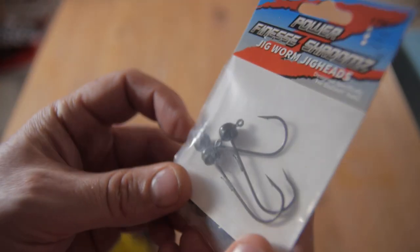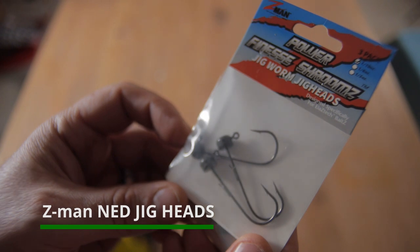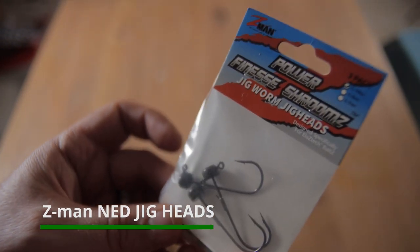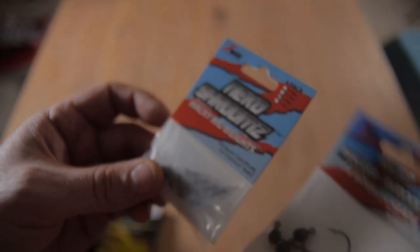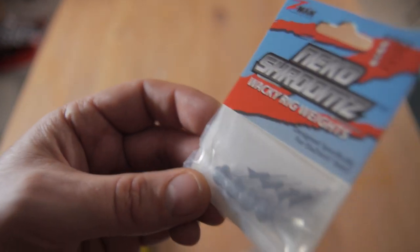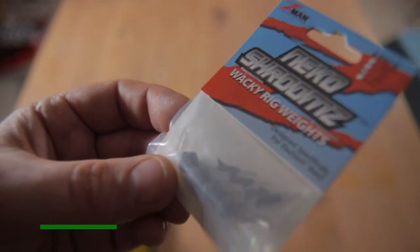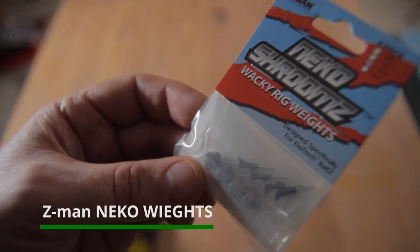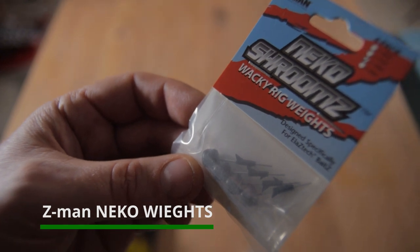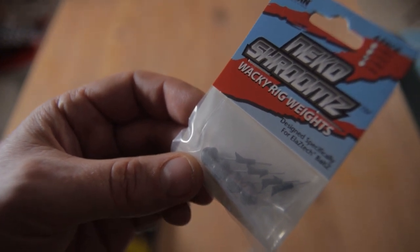Then we've got some proper Ned rig hooks and also some wacky weights, which just go into the bottom of some of those soft plastics and then you hook them through the middle.